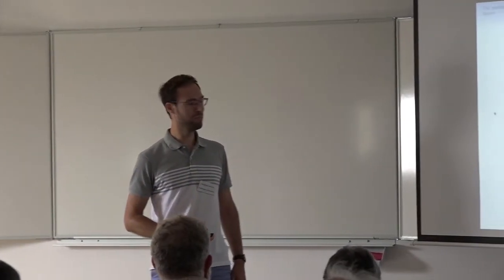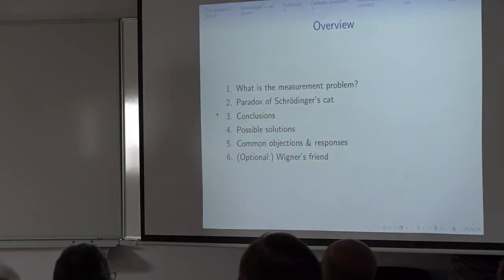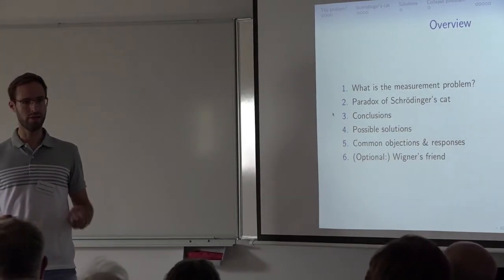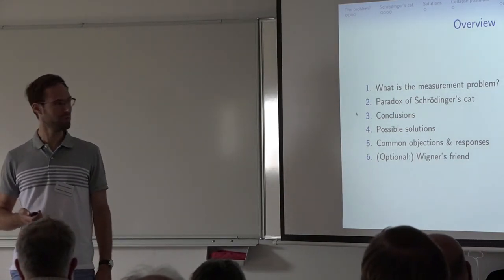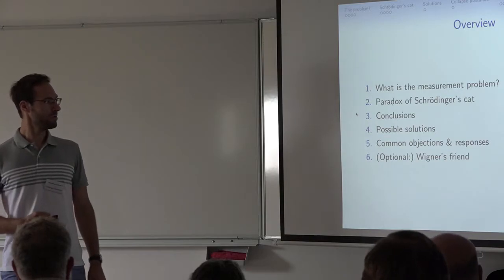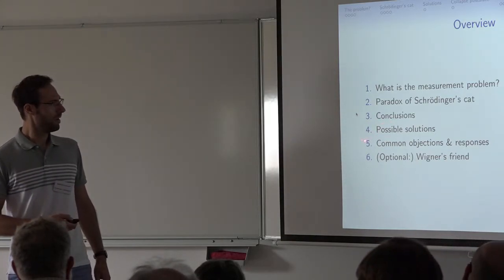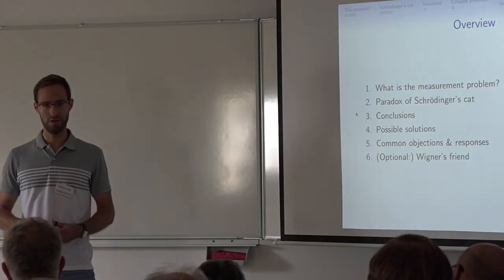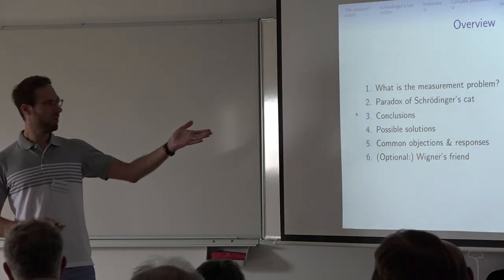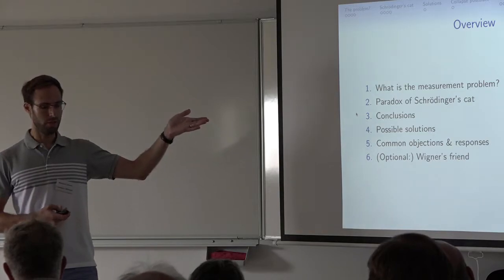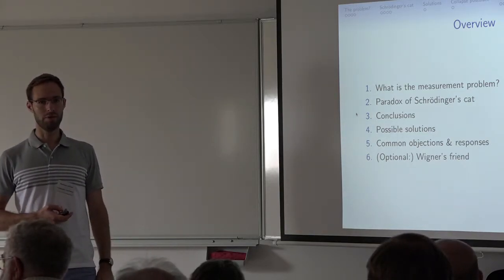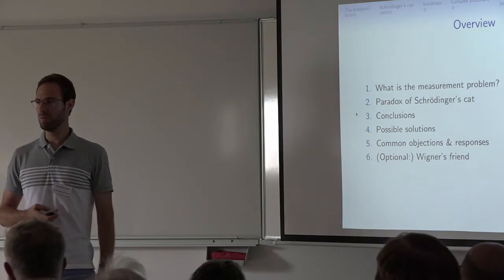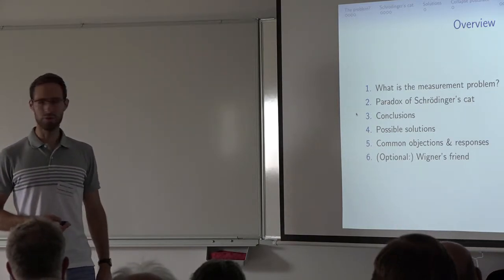My outline for now is: first, to explain what the measurement problem is, to grasp it more precisely; then to say that Schrödinger's cat is actually an instance, an illustration of that measurement problem; to draw conclusions at this point; and to point towards possible solutions of this problem, which will set the stage for later talks in this lecture series.